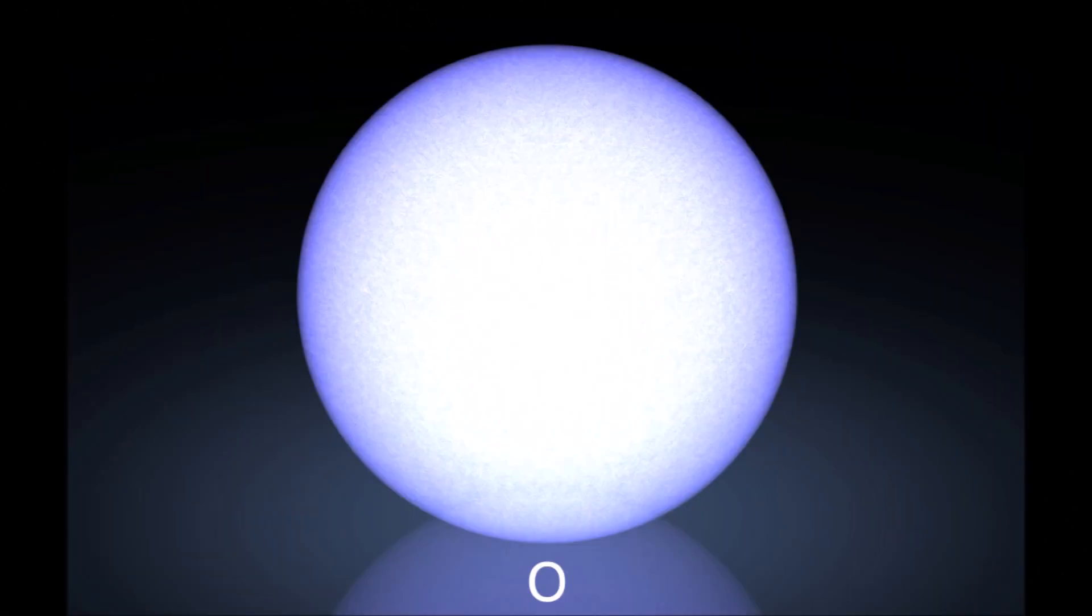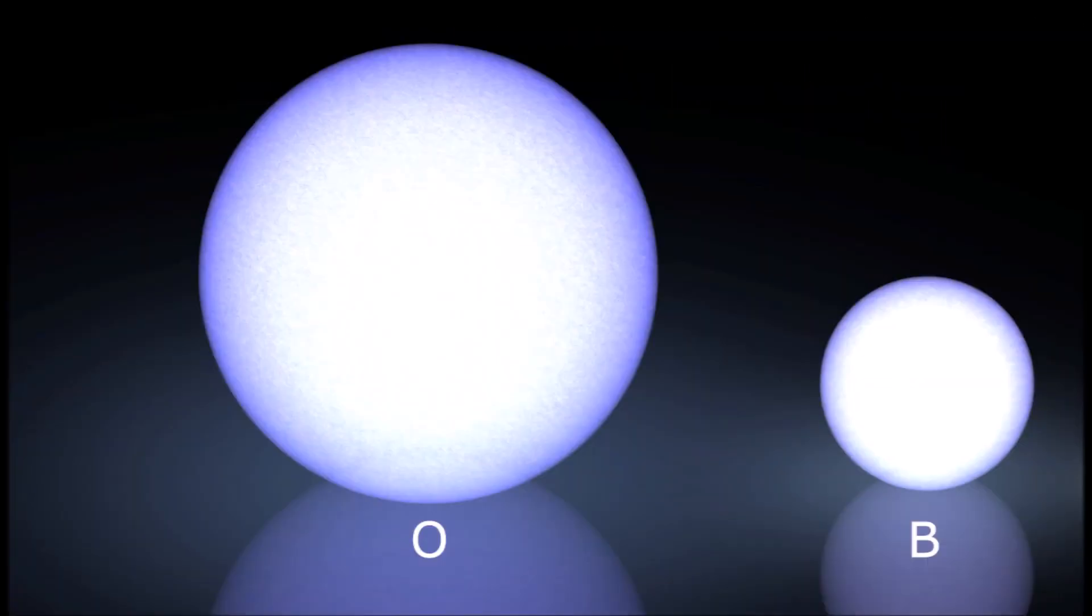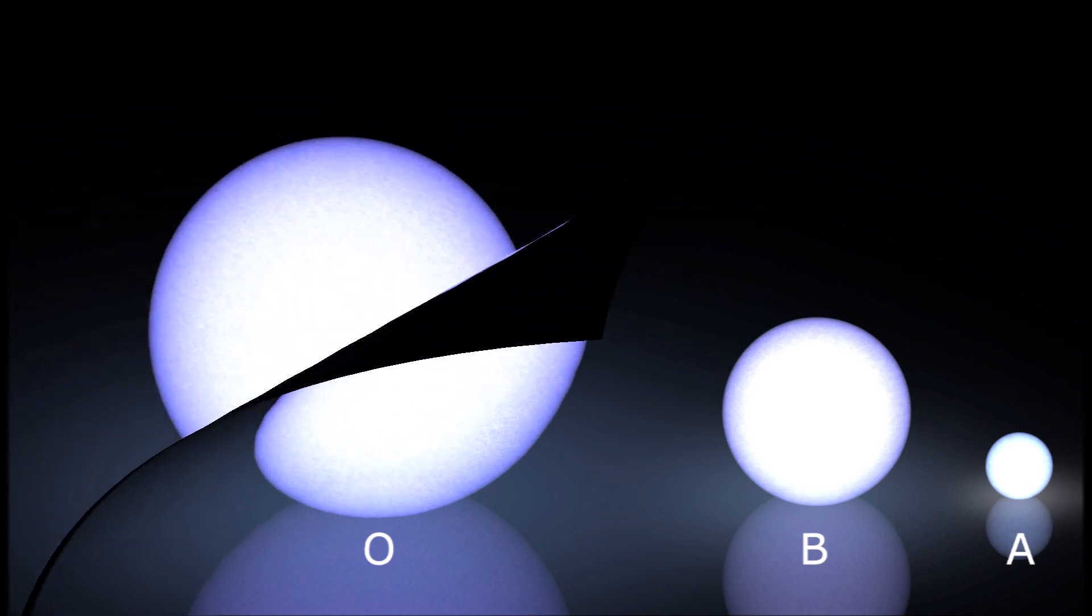O-type stars are the rarest and brightest of all stars. They are blue in color and have temperatures ranging from 30,000 to 50,000 Kelvin. B stars are also hot and blue, but are less luminous than O stars. A stars are white to blue-white and have temperatures ranging from 7,500 to 10,000 Kelvin.